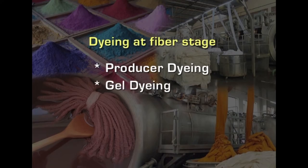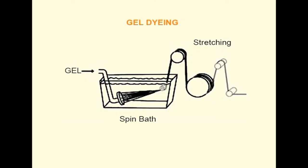The next stage is gel dyeing, especially for wet-spun manufactured fibers. Some fibers like acetate are wet spun. During this process, before the fiber hardens it is in a gel-like stage. When dyeing takes place at that stage we call it gel dyeing. Here also the dye gets trapped within the fibers, giving very good fastness properties.